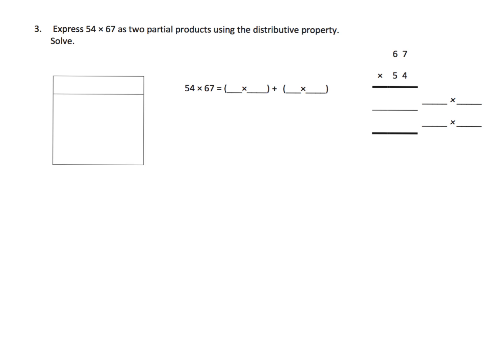Just more practice of the same, only this time they've kind of removed some of our scaffolding. So this is 50 and 4, and this is 67. So we know that our distributive property is going to be 4 times 67, and then it's going to be 50 times 67. So we know that we're going to do 4 times 67, and then we're going to do 50 times 67. And so scratch paper down here, 67 times 4.